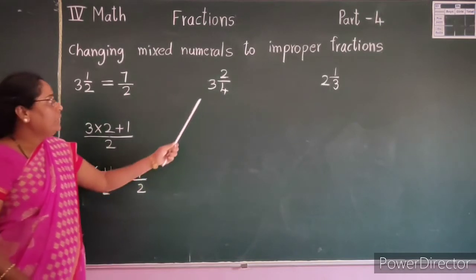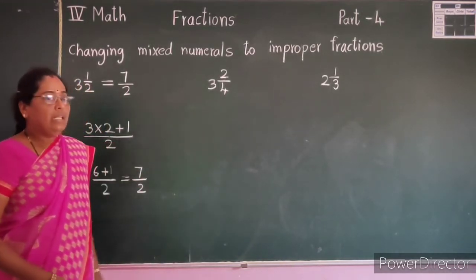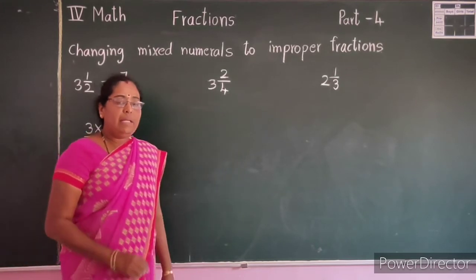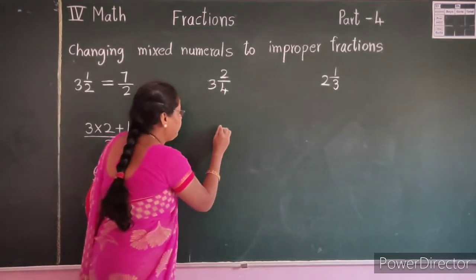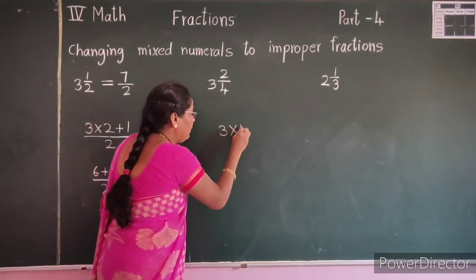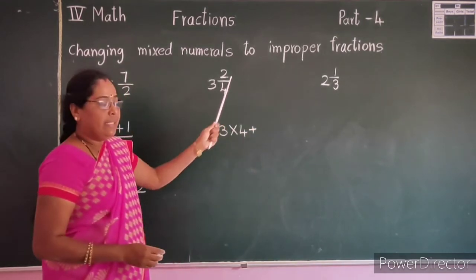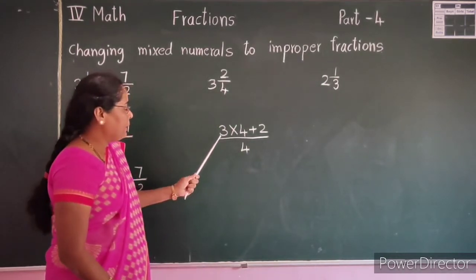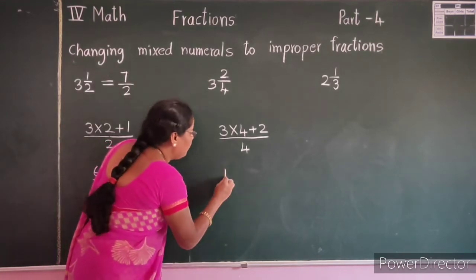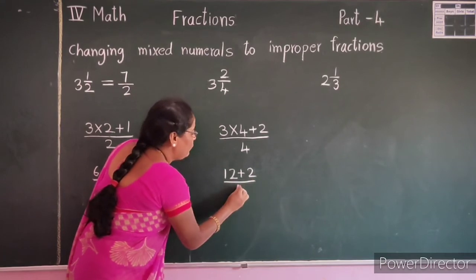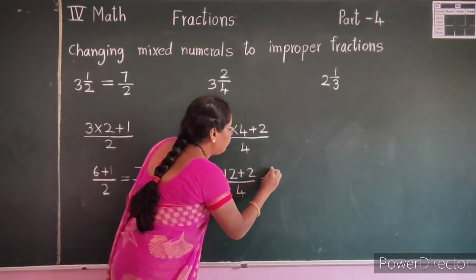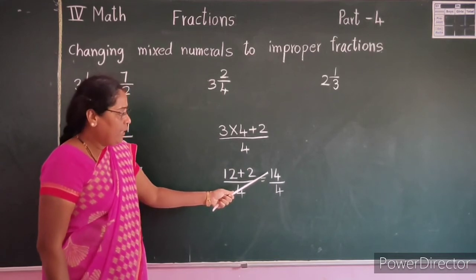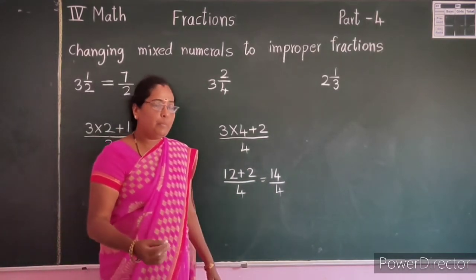Let's see one more example: 3 and 2 by 4, which is a mixed numeral. Multiply whole number 3 by denominator 4, then add numerator 2, and write denominator 4 as it is. 3 times 4 is 12, plus 2 equals 14. So the answer is 14 by 4. Here 14 is the numerator and it is greater than the denominator — that is an improper fraction. So 3 and 2 by 4 equals 14 by 4.